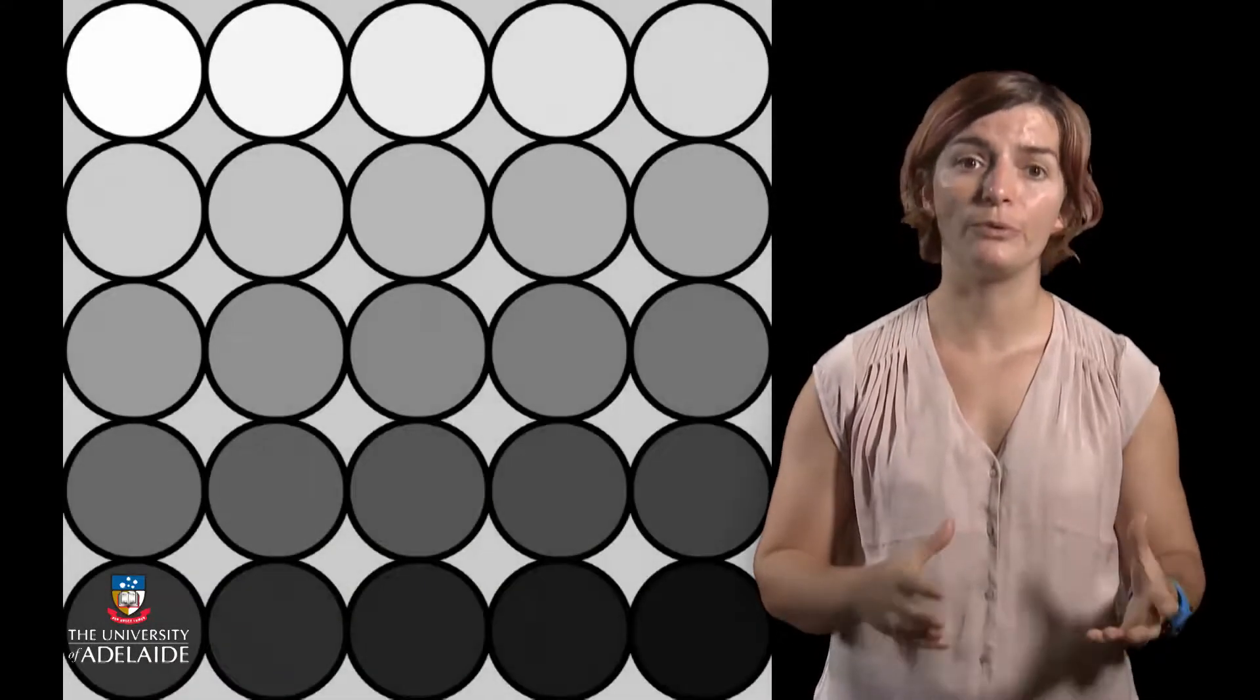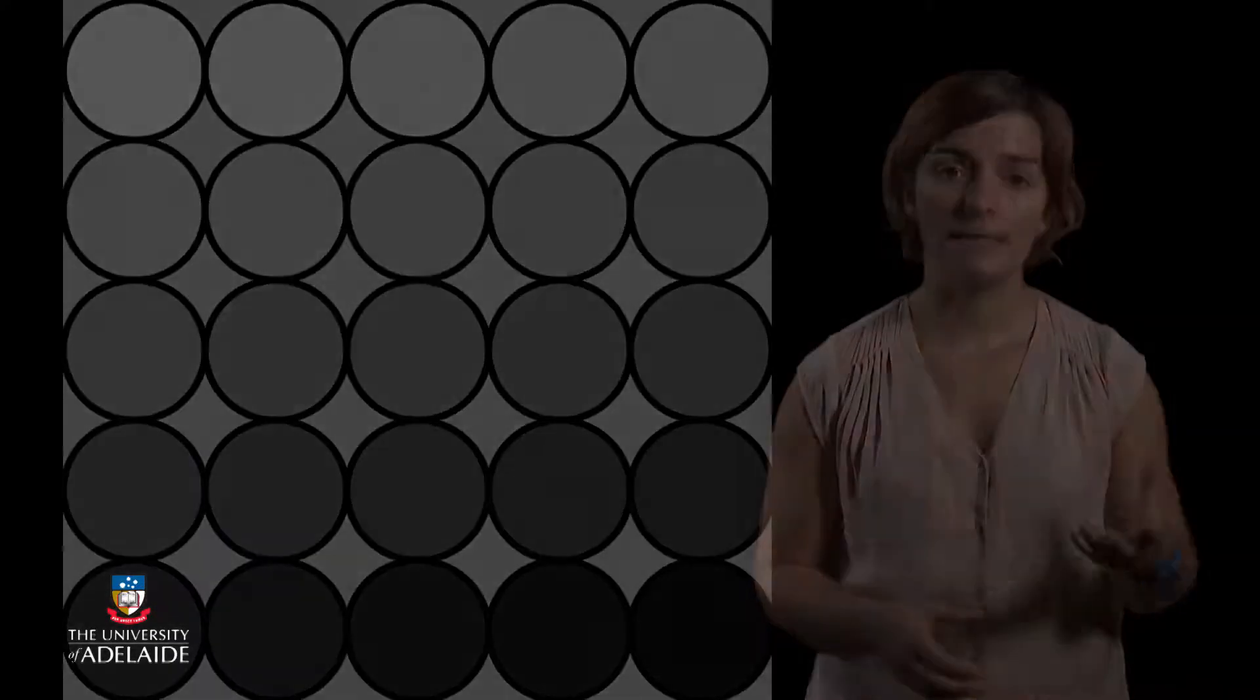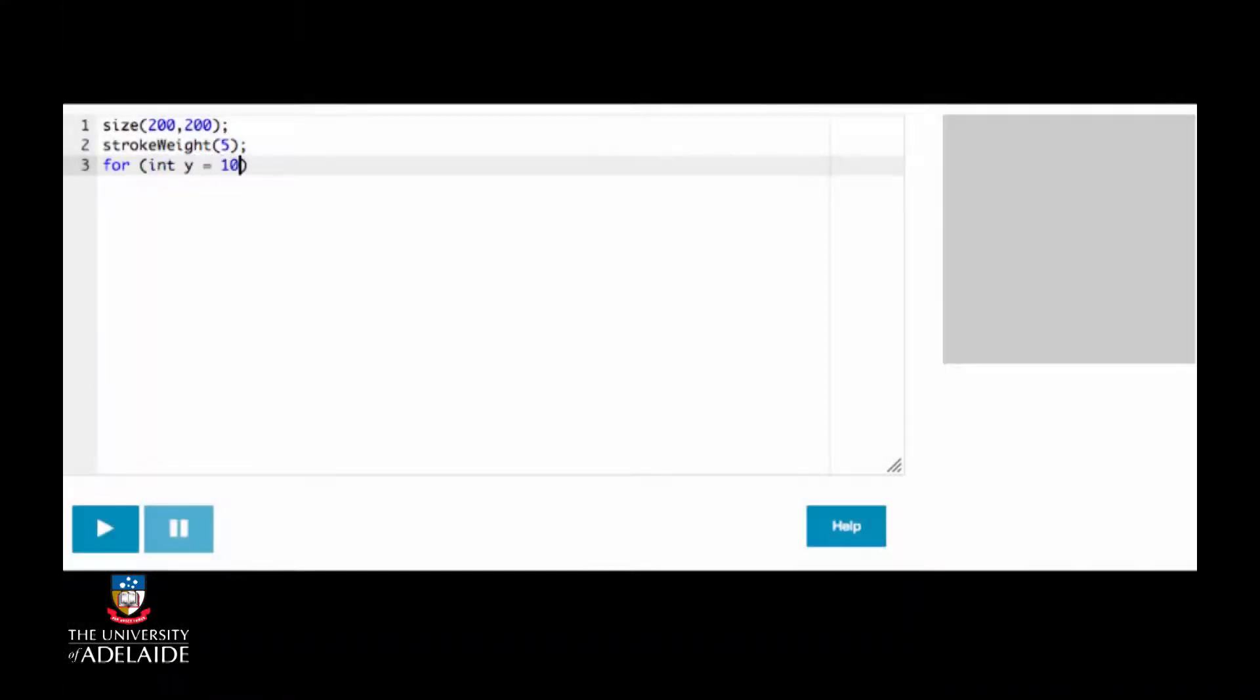Let's try one more example. Say we wanted to draw a 5 by 5 grid of circles, let's say a radius of 10, that are filled with all shades of grey, starting from white and ending up at dark grey. Similar to how we drew the points before, we will use a nested for loop, but instead of the points, draw ellipses, such as this one.